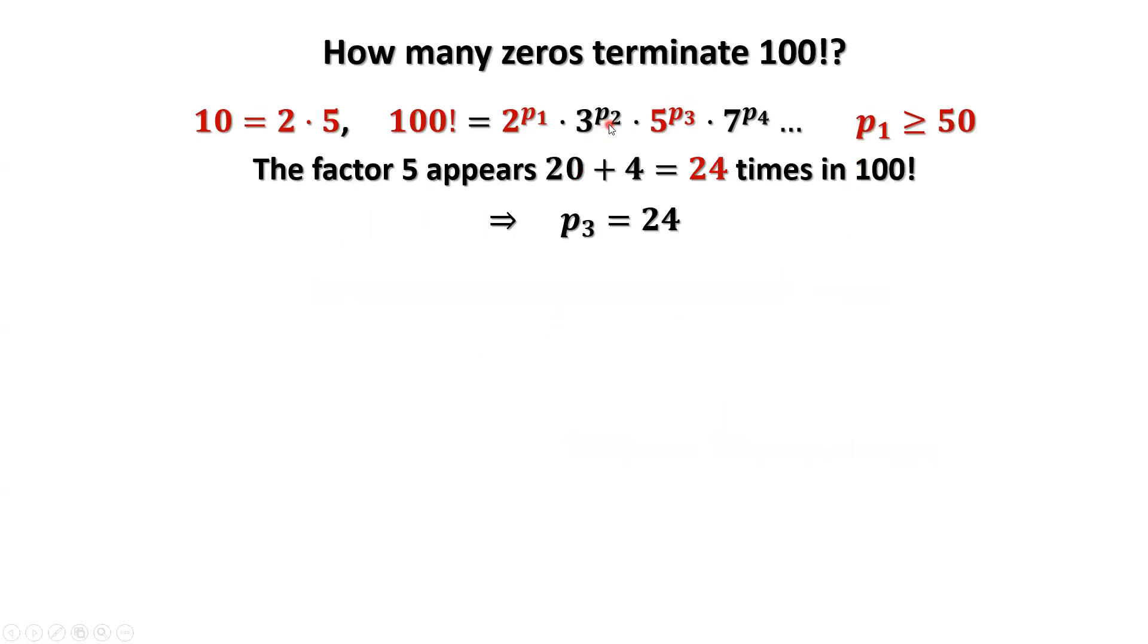Therefore, p3 equals 24. Since p1 is bigger than 50 and p1 is bigger than p3...